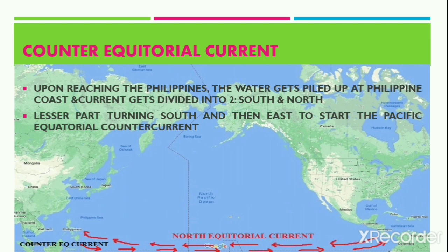Upon reaching the Philippines, there is a high volume of water piled up near the coast of the Philippines, and thus the current gets divided into two — the North and the South. The lesser amount of water turns towards the south, and then to compensate the deficit of water in the eastern part of the Pacific Ocean, it starts moving from west to east. This is termed the Counter Equatorial Current.